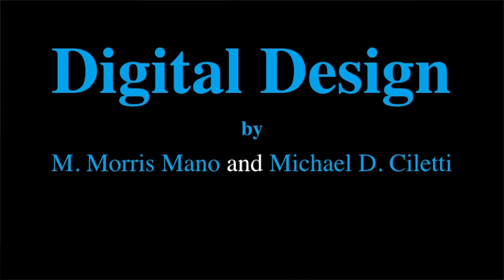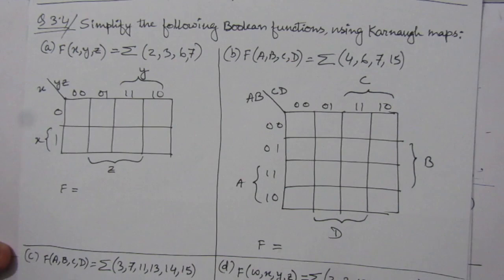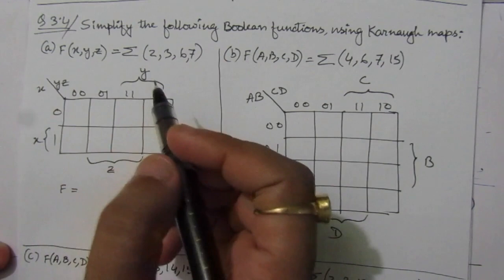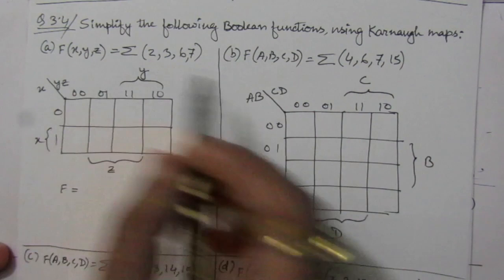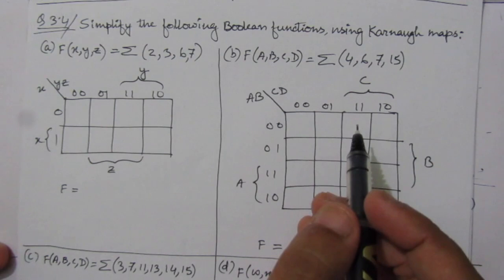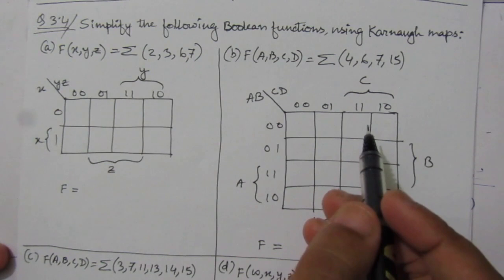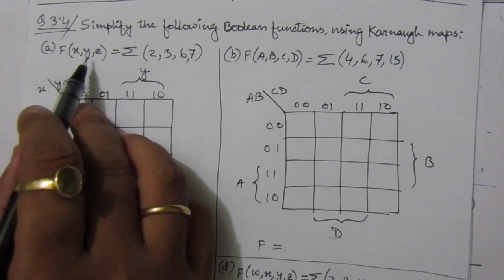Dear students, I welcome you all to this problem solution series in digital electronics. I am solving problems from the book Digital Design by Morris Mano and Michael C. Ciletti. In this video I am solving problem number 3.4 from chapter three: simplify the following boolean functions using Karnaugh maps. We are given six different boolean functions A, B, C, D, E, F, and we have to use the K-map to find the minimal simplified expression.